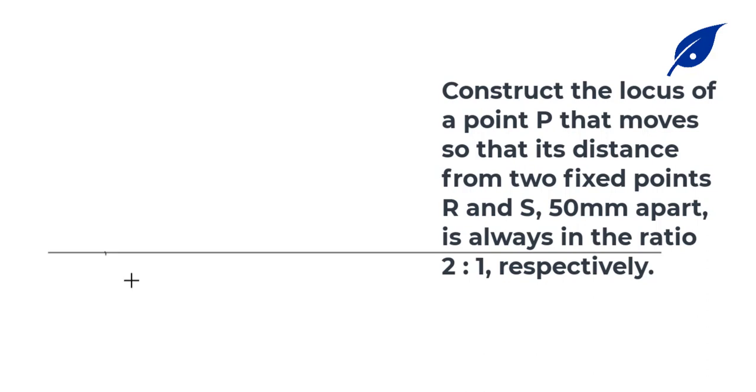Welcome to this lesson. Today we shall consider the construction of a locus of a point that moves so that its distance from two fixed points R and S is 50 millimeters apart.